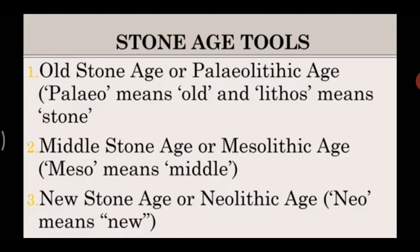The three periods of the stone age are: the first, the Old Stone Age or Palaeolithic Age — where 'paleo' means old and 'lithos' means stone; the second, the Middle Stone Age or Mesolithic Age — where 'mesio' means middle; and the third, the New Stone Age or Neolithic Age — where 'neo' means new.